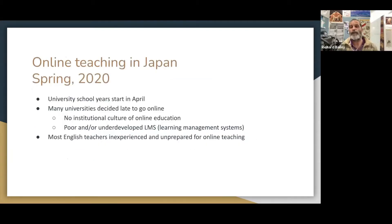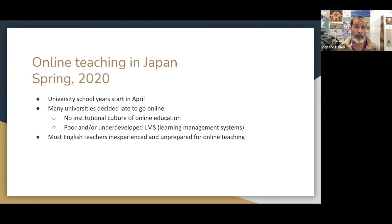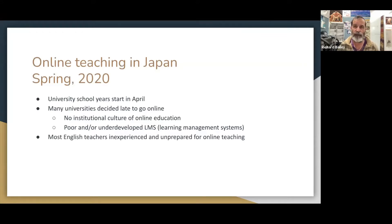Let's talk a little bit about the situation in Japan because that affected a lot of what we had to do. Our spring semester starts usually on April 1st. In 2020, as the coronavirus situation was getting worse around the world and also in Japan, many universities were debating about whether they were going to go online. Many waited literally until the last minute, so we had very little time to prepare to go online.